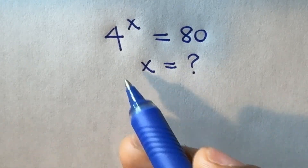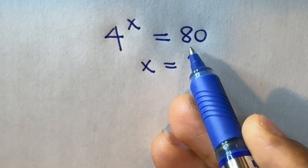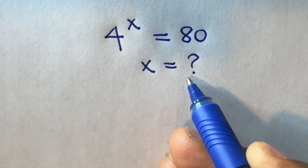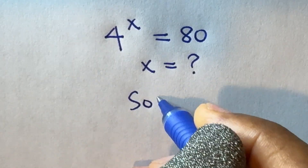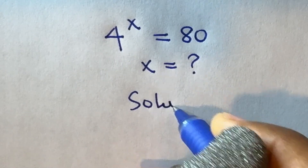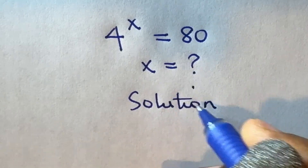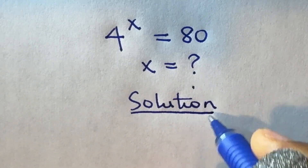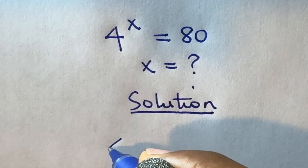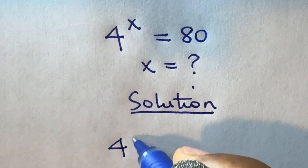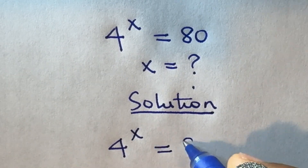Hello. 4 raised to the power x is equal to 80. Find x. The problem given is exponential: 4 raised to power x is 80.